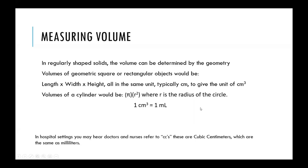When calculating volume with length times width times height, if the unit is centimeters, then centimeters times centimeters times centimeters gives a unit of centimeters cubed. In hospital settings or the medical field, you might hear the term CCs, which stands for cubic centimeters. One cubic centimeter is equal to one milliliter.